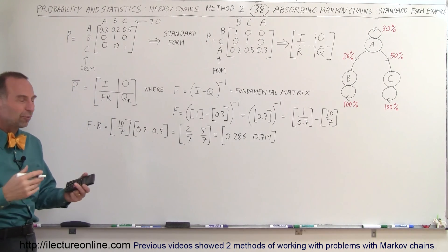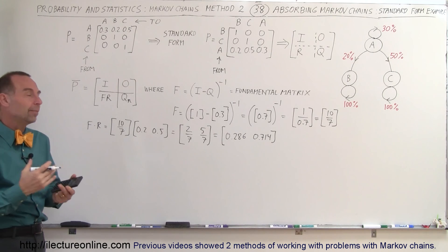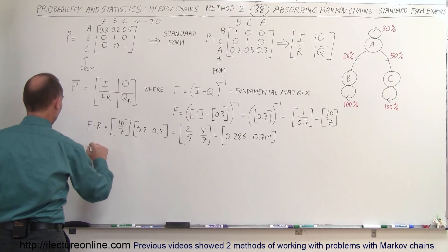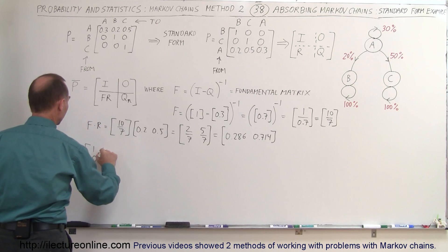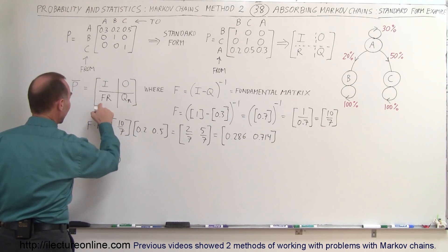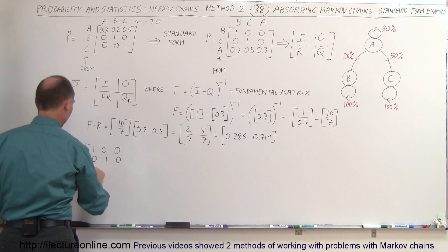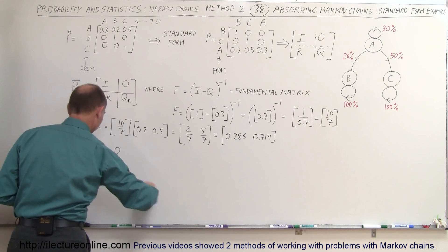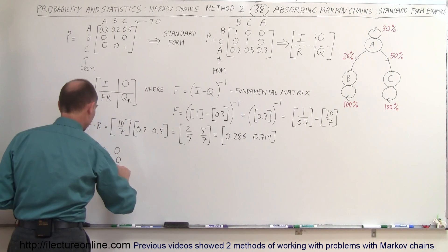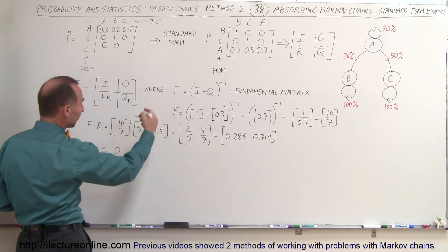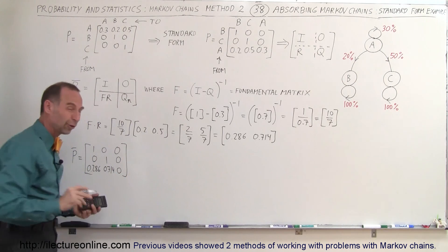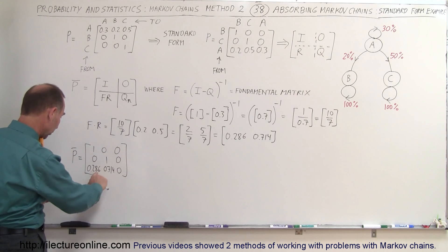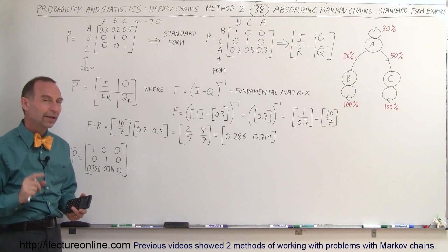Now we can write down the stable transition matrix, which is what you get when you multiply the transition matrix by itself many many times. The stable transition matrix has the identity matrix [1,1; 0,0], the zero matrix, the F times R matrix [0.286, 0.714], and the Q sub n matrix which is zero. As a quick check, every row should add up to 1, and indeed each row sums to 1.